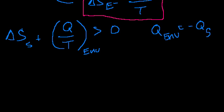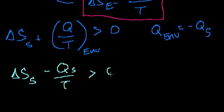So the argument would go, you know, this thing I can rewrite. I can rewrite this equation as delta, the change in entropy of the system, instead of writing a plus Q of the environment here, I could write a minus Q of the system over T is greater than 0.